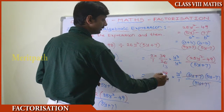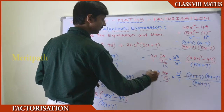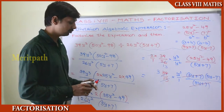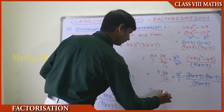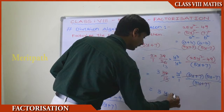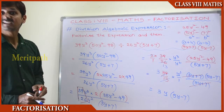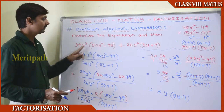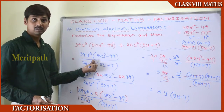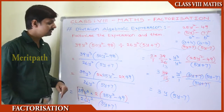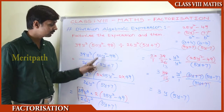We can cancel (5y + 7) from numerator and denominator. On the left side, the numerical value 39/26 simplifies: cancelling by 13 gives 3. After all cancellations we are left with 3 × y × (5y − 7).